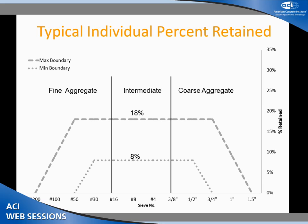If we look at this other curve — the typical percent retained curve, also called the 818 curve — this is a different way of looking at your aggregate gradation. Instead of looking at percent passing, we look at how much is retained on the different sizes. We have fine aggregates on one side, intermediate in the middle, and coarse on the other. These curves, often called a haystack curve, have to total to 100%.